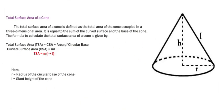Now, total surface area of a cone. The total surface area of a cone is defined as the total area of the cone occupied in a three-dimensional space. It equals the sum of the curved surface area and the base of the cone. The formula to calculate the total surface area: TSA equals curved surface area plus area of circular base. Area of circular base is πr square. Curved surface area is πrl. So TSA equals πr(r + l), where r is the radius of the circular base and l is the slant height of the cone.